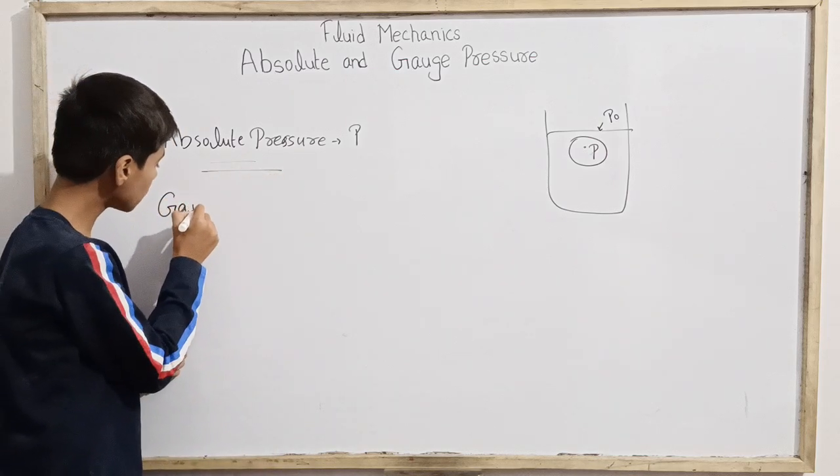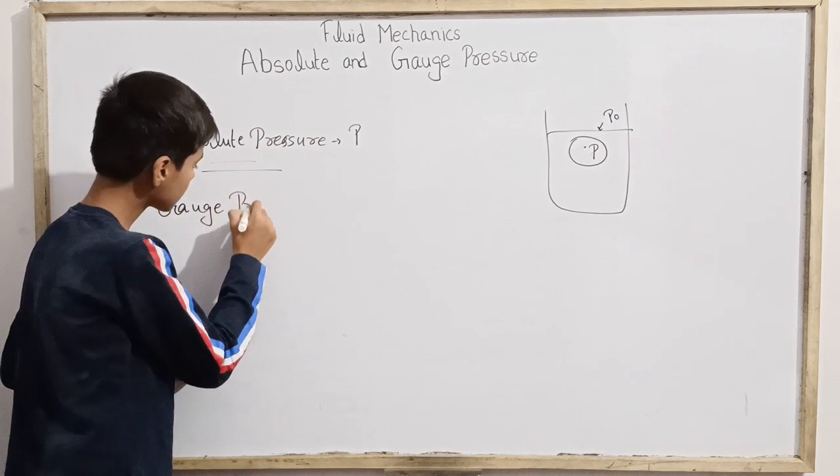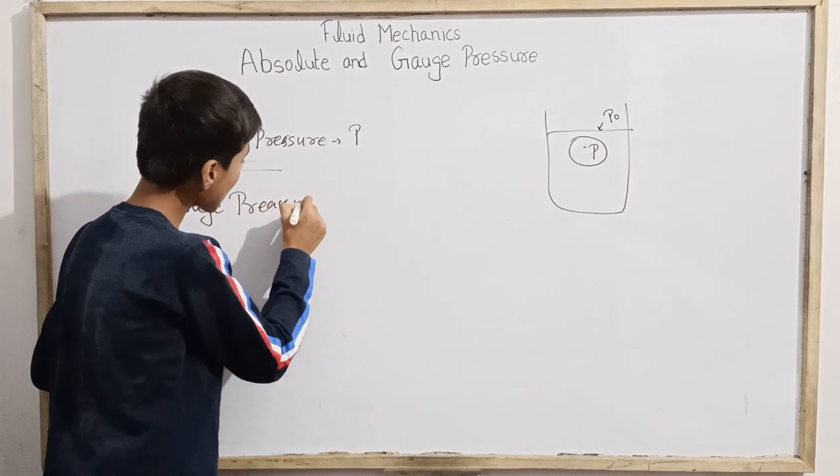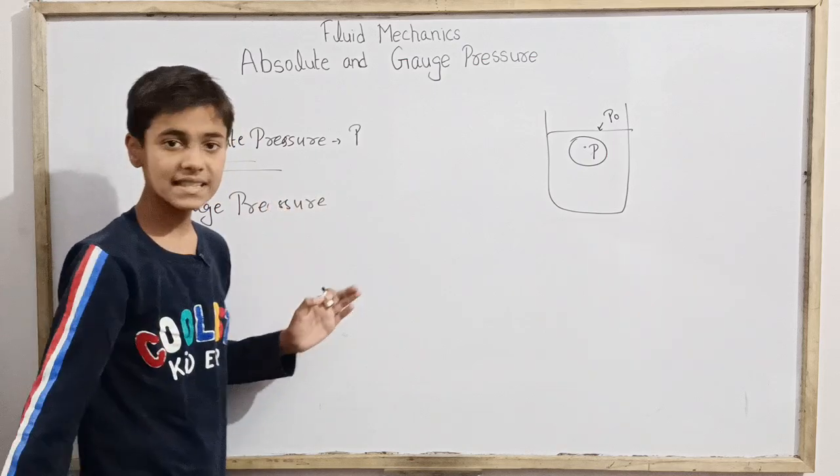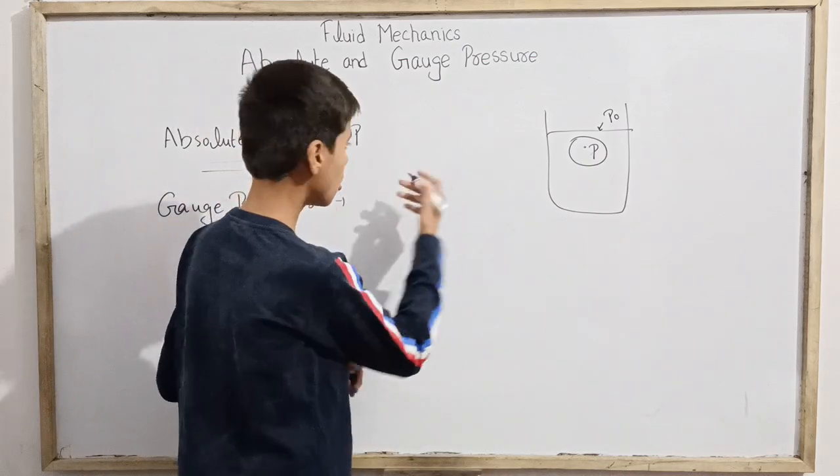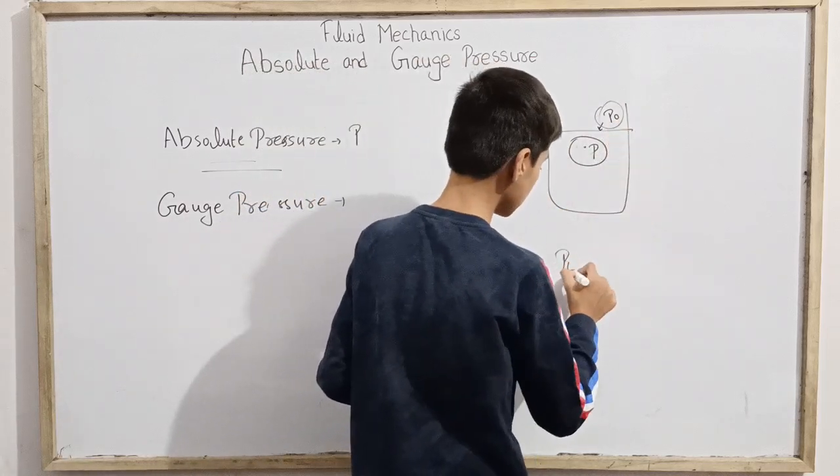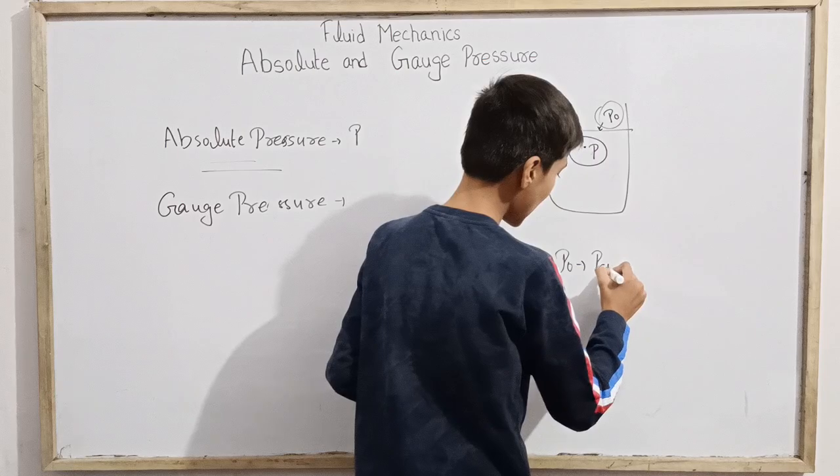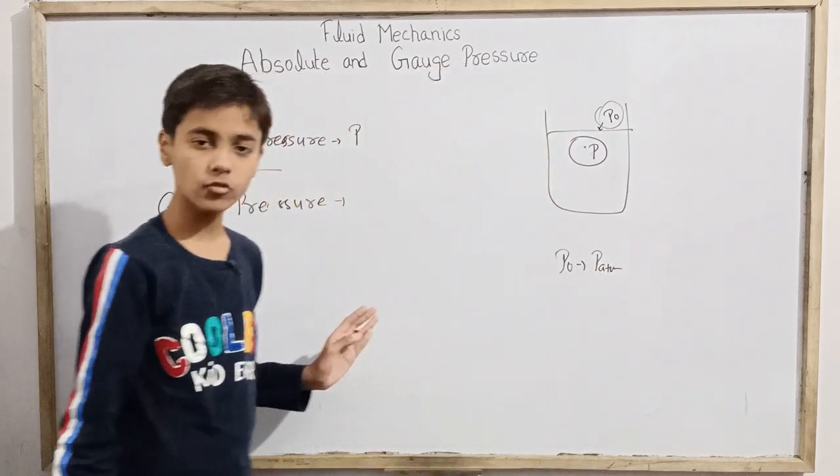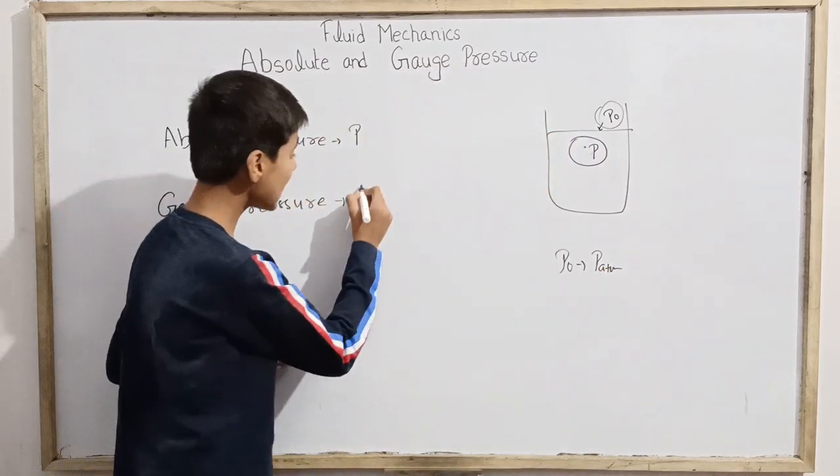But when we discuss gauge pressure, this is the excess pressure. In excess to what? In excess to the atmospheric pressure, or the pressure around the surrounding. Here the atmospheric pressure P0 is actually the atmospheric pressure. So what is the excess pressure?